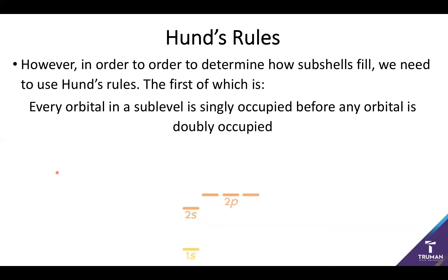The first of Hund's rules is: every orbital in a sublevel should be singly occupied before any orbital is doubly occupied. For example, dealing with carbon — six electrons — I'm going to fill up the 1s orbital first with two electrons, then 2s with two more electrons, leaving two electrons to put in the 2p orbitals. But the question is how? Do I put two of them in the same orbital, or spread them out across M_L = +1, 0, -1?